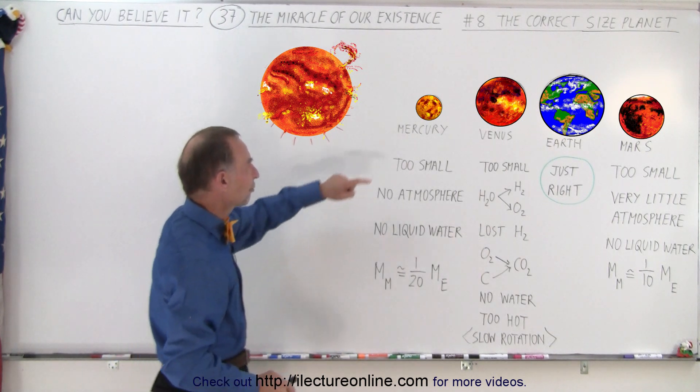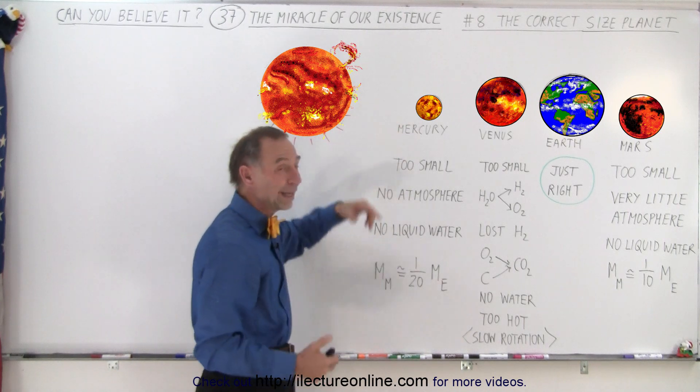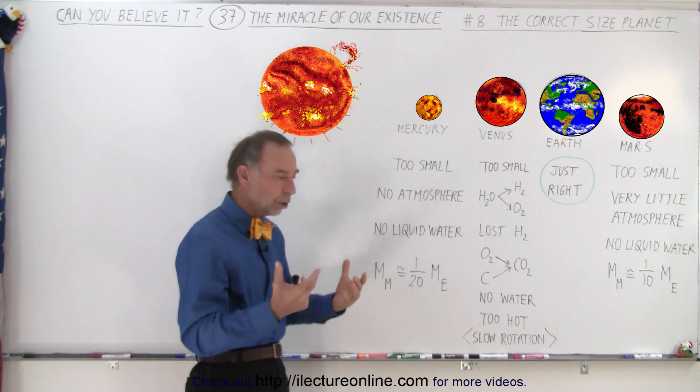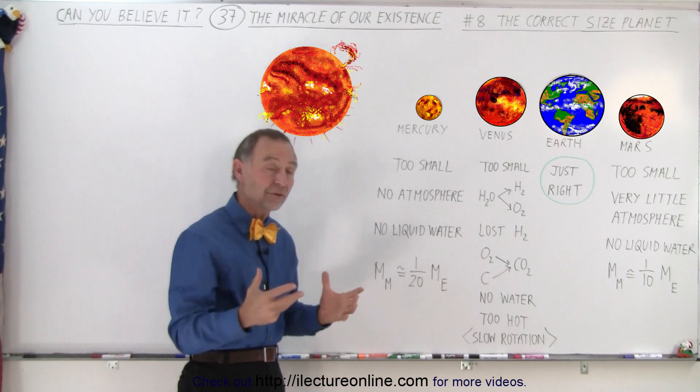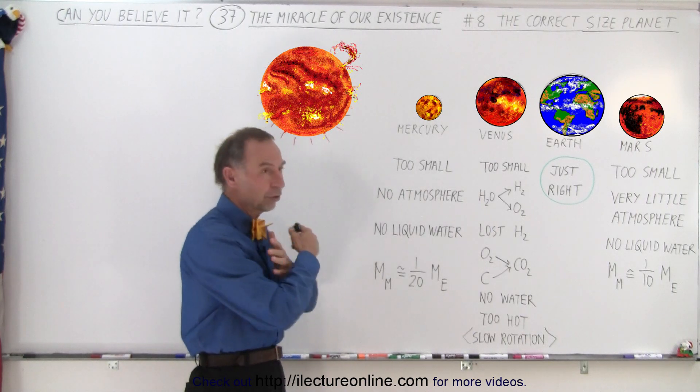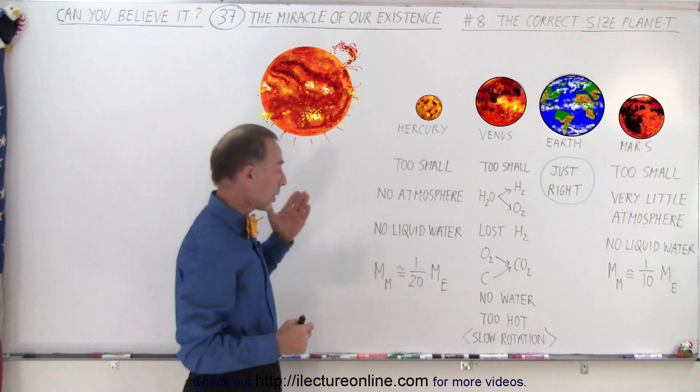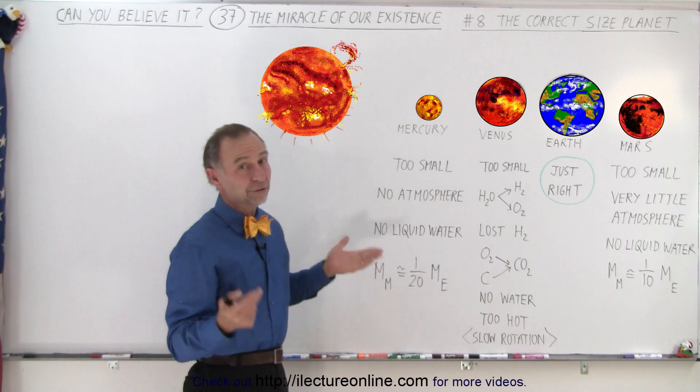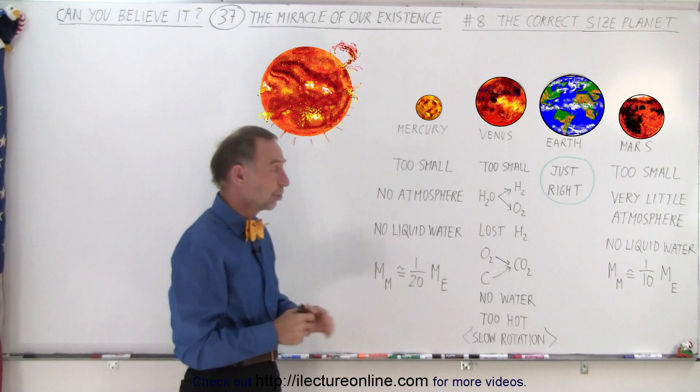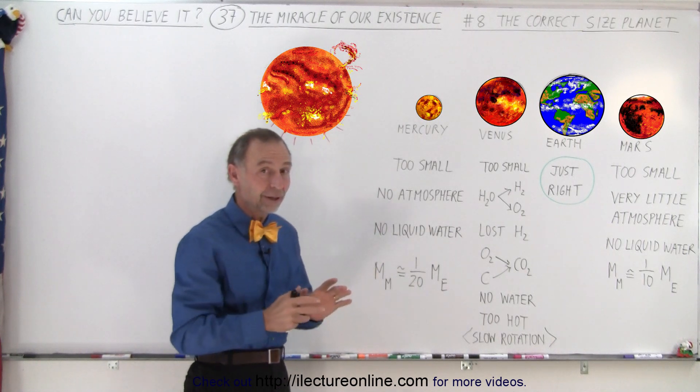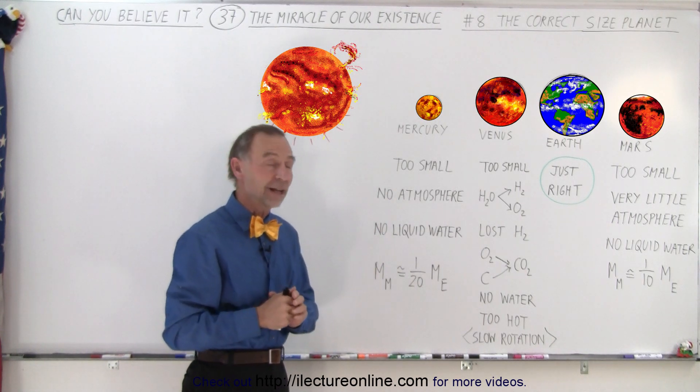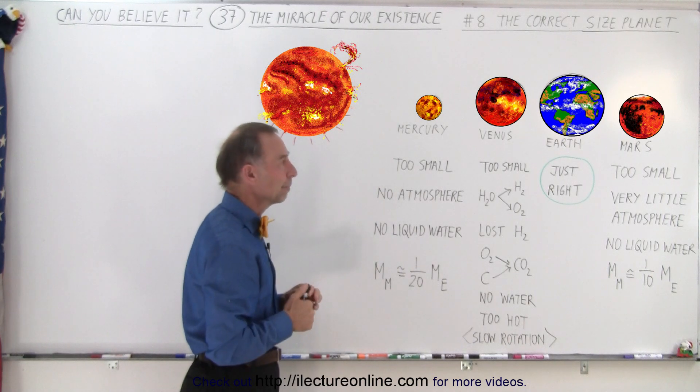Mercury is far too small. The problem with being small when you're a terrestrial planet, you don't have enough gravitational force to hang on to an atmosphere. The atmosphere on Mercury has long ago left Mercury. There's no atmosphere, therefore no liquid water, and therefore life is virtually impossible. There's other reasons why Mercury makes a very bad planet for life, but size is definitely the big one.